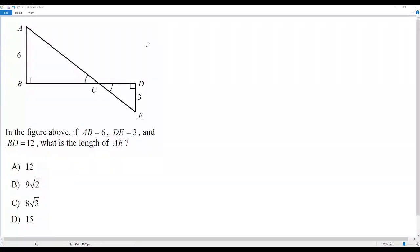Here we have a geometry problem. In the figure above, if AB equals 6, DE equals 3, and BD equals 12, what is the length of AE? They're asking us to find the length of the line segment AE.